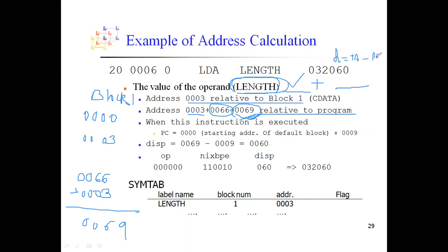The target address is 0x0069. The formula for displacement is: target address minus PC. PC is the address of the next instruction in block 0 after LDA LENGTH, which is 0x0009. So displacement = 0x0069 minus 0x0009 = 0x0060. The last 3 digits — 060 — are taken as the displacement. This is how you generate object codes for program blocks.